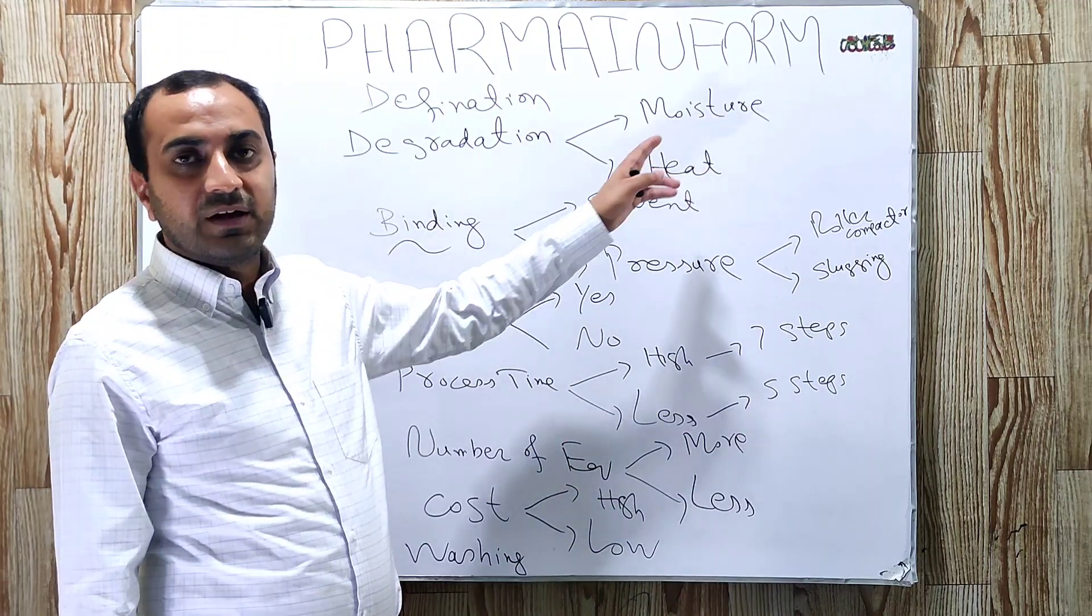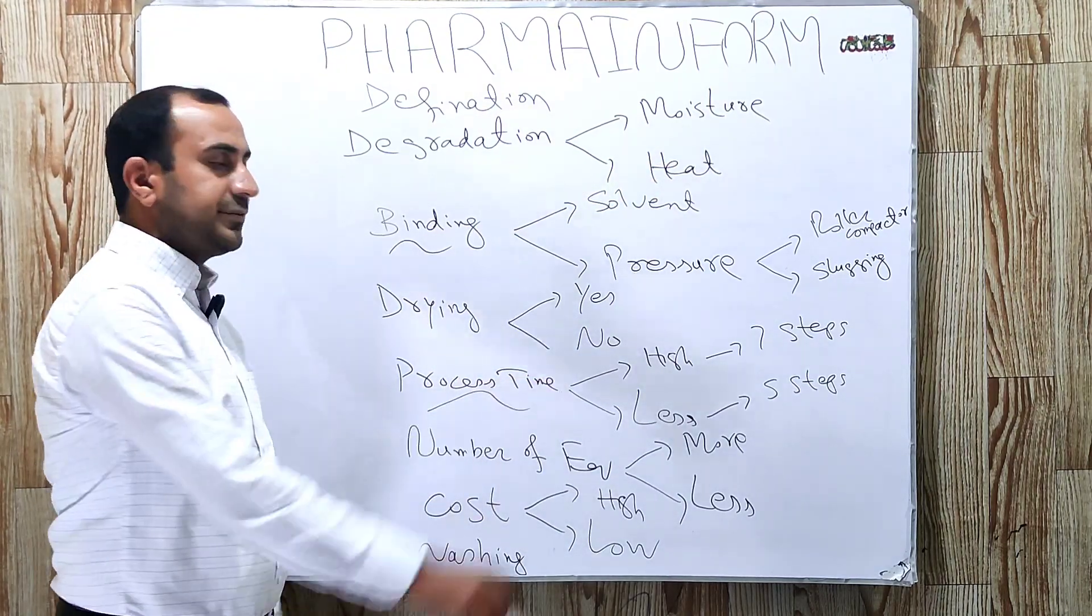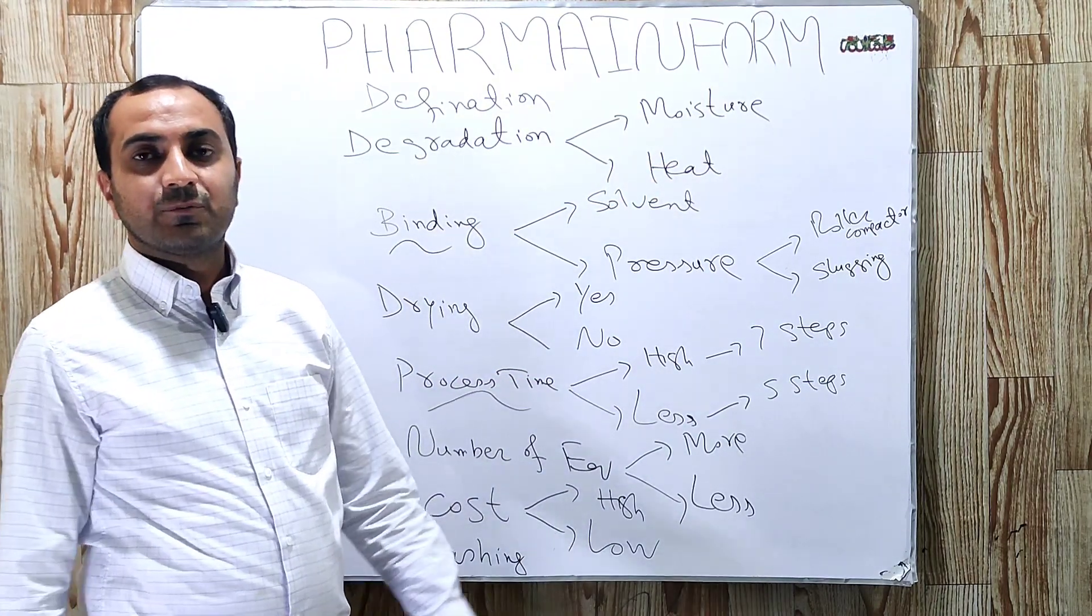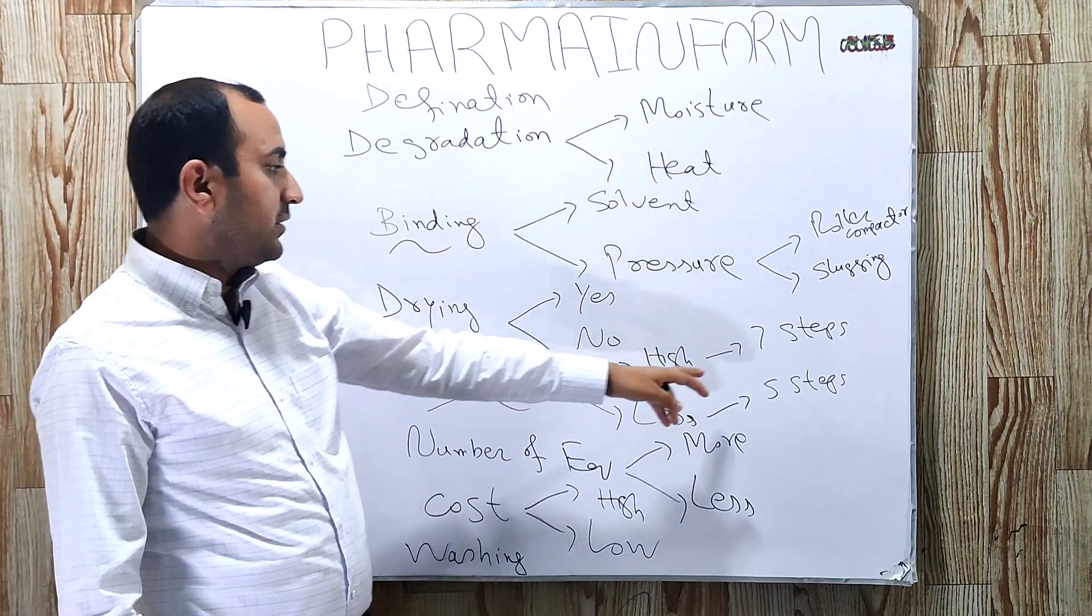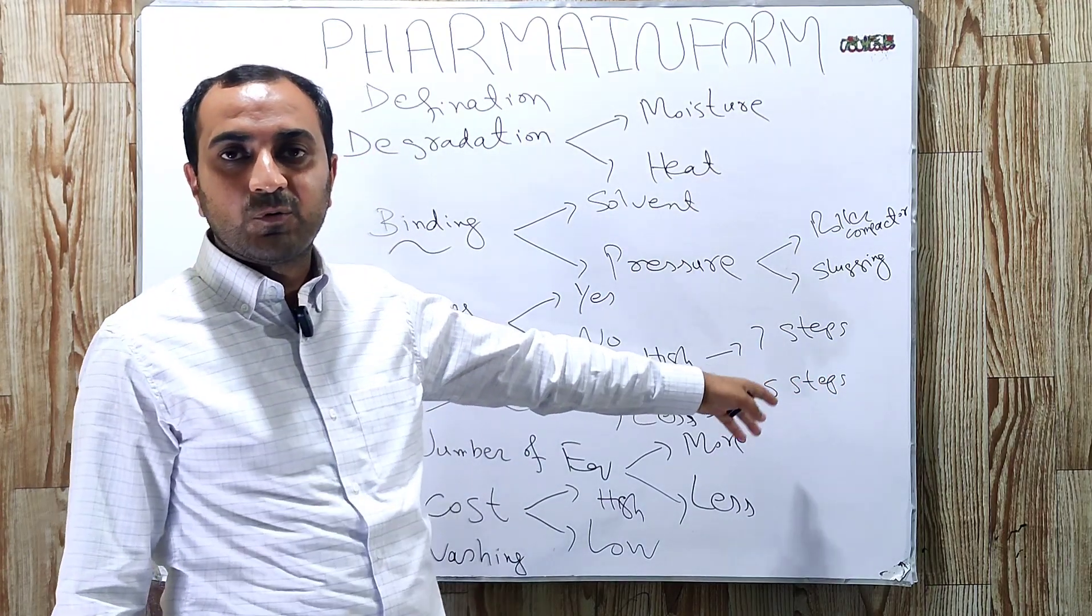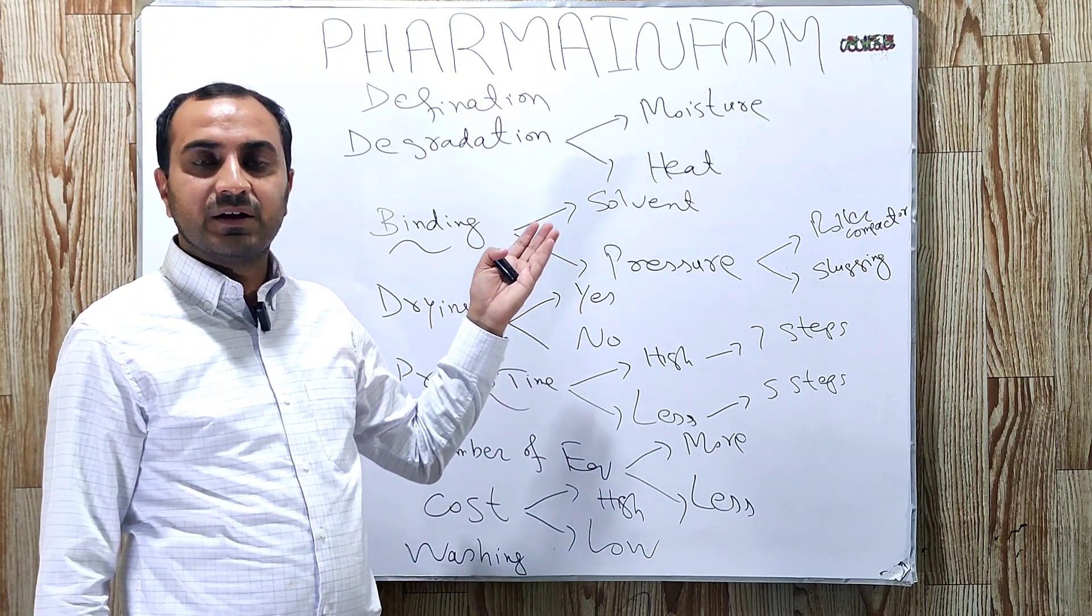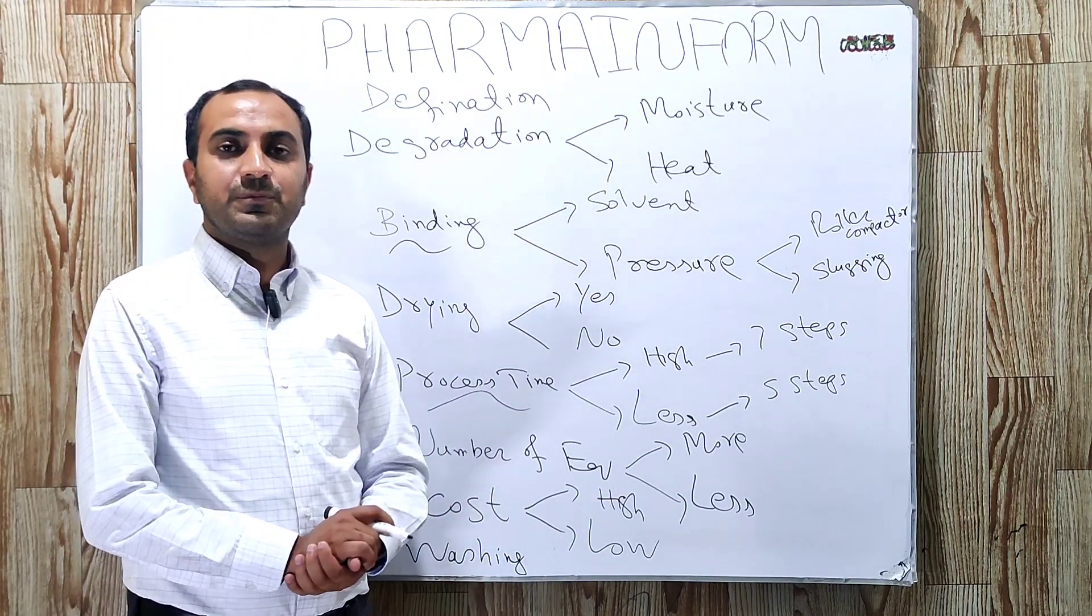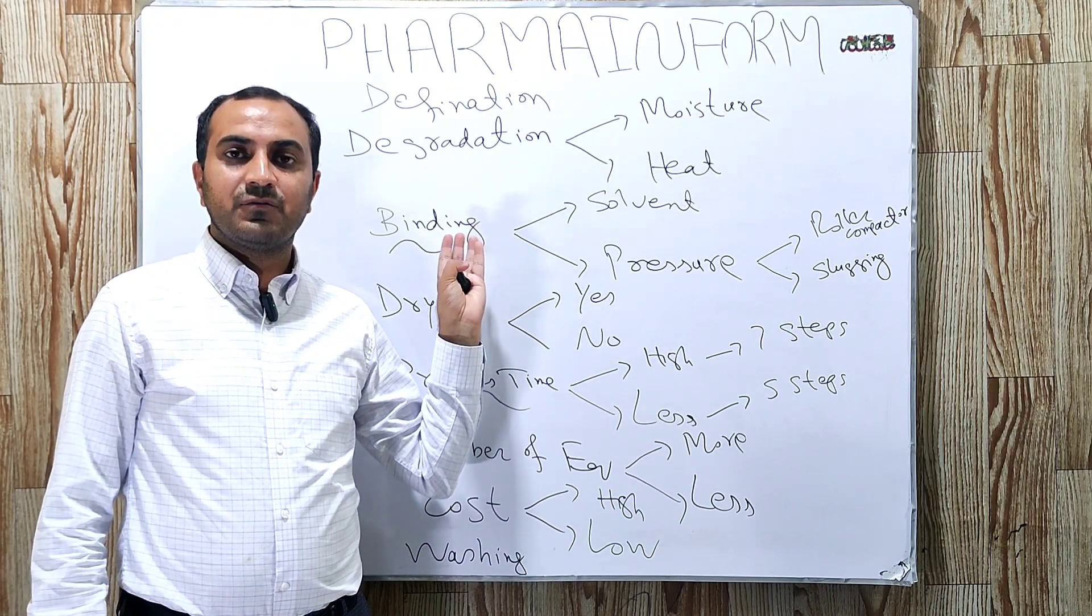The next one is process time. The process time of wet granulation is high and it includes seven steps. You can watch all these steps by the link provided in pharma.com. The link is also given in the description, so you can take a screenshot and share it with others.